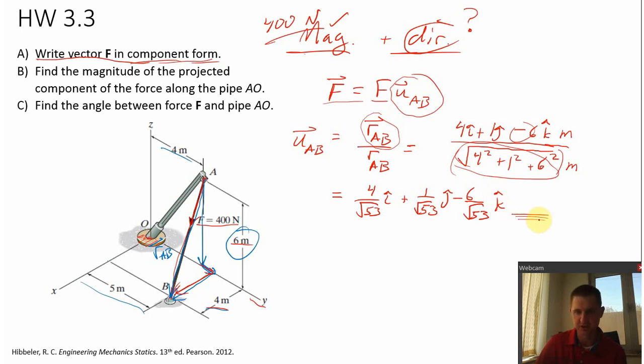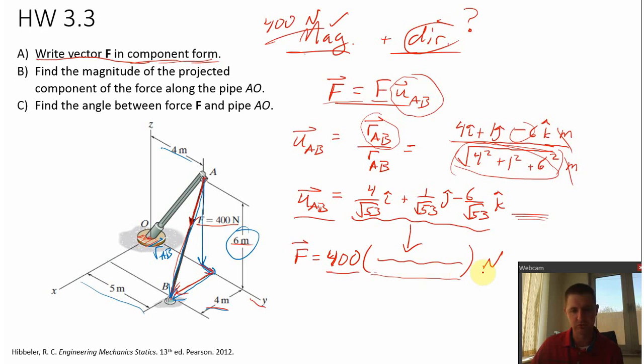So minus six divided by square root of 53 K hat. Now, are there any units here? Well, let's look back at how we found it. Remember, the position vector was in units of meters and the magnitude of the position vector was also in meters. So those canceled. So unit vector has no units. It's unitless. So now that we have unit vector AB, then it's just a matter of writing down what we already know to write the force vector in component form. So the magnitude of the force is 400 times, I'm just going to be a little bit lazy and just copy paste all that right there. And then the units of this vector will be in newtons. Now the unit vector is unitless, but the magnitude 400 is in newtons. So there is your answer for part A.